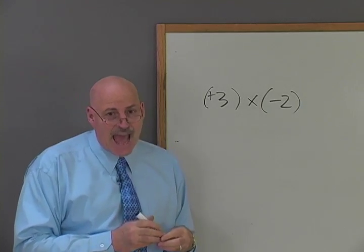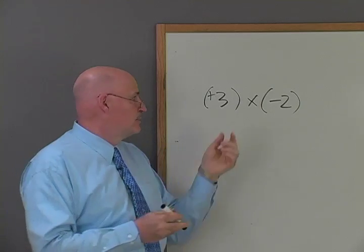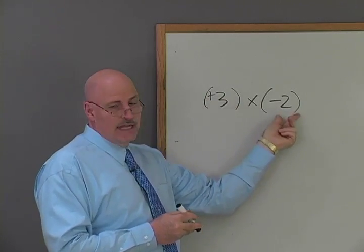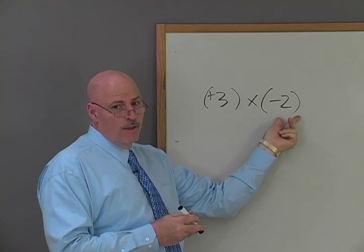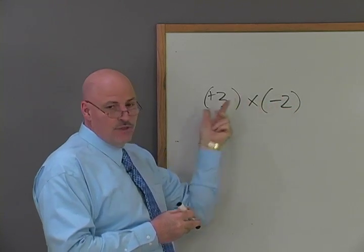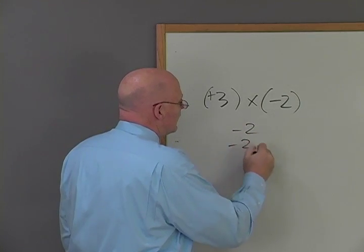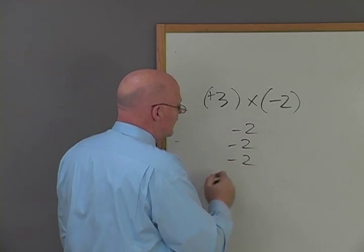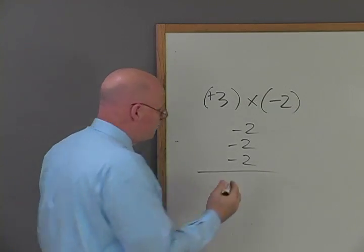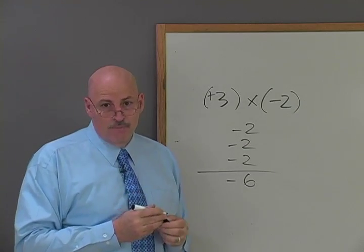Multiplication is fast adding of the same number. So you could say three times negative two, or you could say negative two counted three times. You could put negative two plus negative two plus negative two. And what's that going to be? Pretty easy, right?